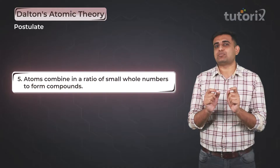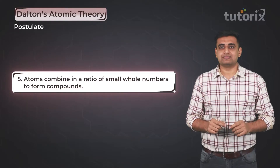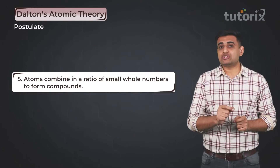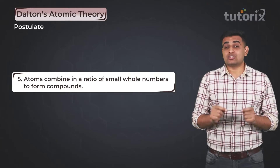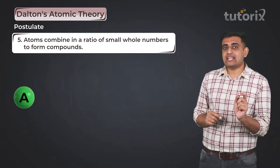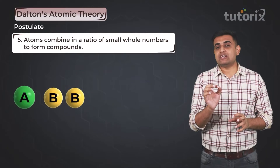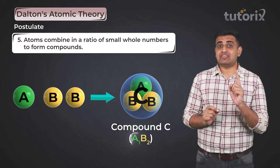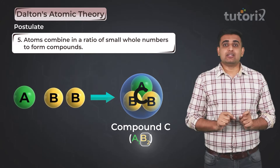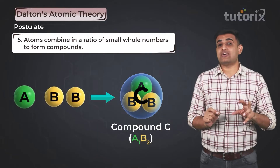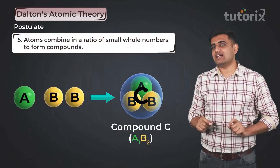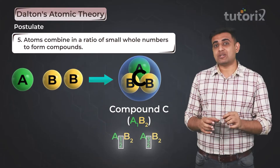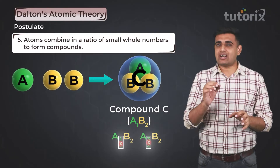Now let's look at the fifth postulate of Dalton's Atomic Theory. Dalton explains that atoms combine in a ratio of small whole numbers to form a compound. For example, one atom of element A reacts with two atoms of element B to form one unit of compound C. In this unit, we have one atom of A and two atoms of B — these are whole numbers. You will not find half an atom or three-fourths of an atom combining to form a compound.